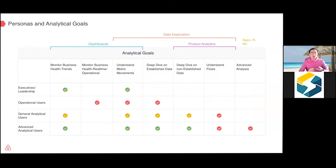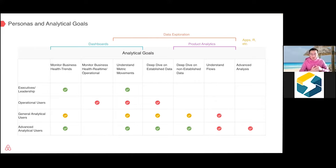We look at BI scenarios in two dimensions. One is personas — who is using our BI system and what their analytics goals are. From the persona perspective, we have executives and leadership looking at dashboards, operation users looking at various dashboards and data, analytics users like data scientists and business analysts, and engineers looking at different graphs. From the goals perspective, sometimes we try to understand what metrics look like, or we want to dive deeper into datasets to understand behaviors.